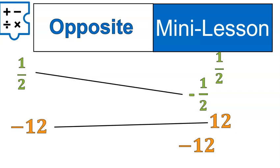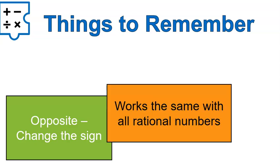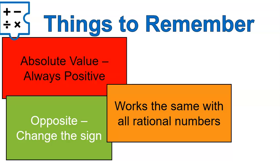This is what the worksheet and the quiz are going to help you practice. A couple things to remember: when it's opposites, you change the sign. When it's absolute value, it ends up always being positive. Both of these work with all rational numbers — whether we're talking about a fraction, a whole number, or an integer. These are the rules to remember. Go ahead and practice using the worksheet. Good luck on the quiz. Have a wonderful day.